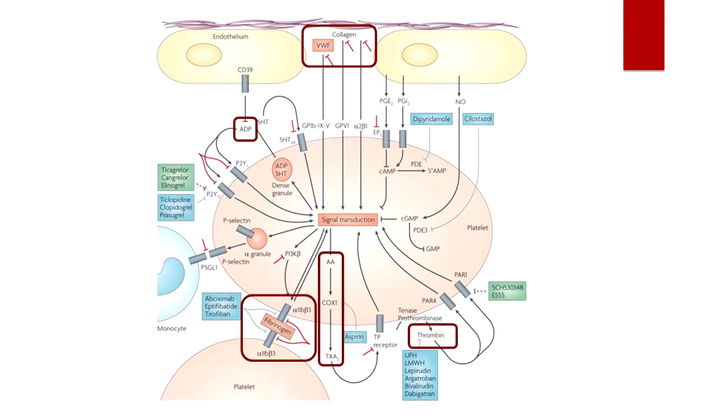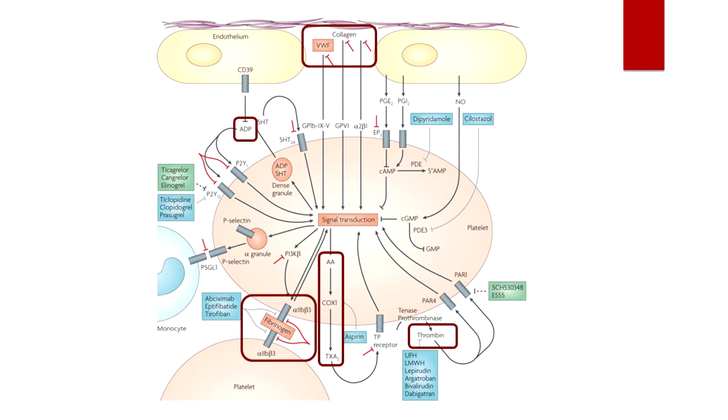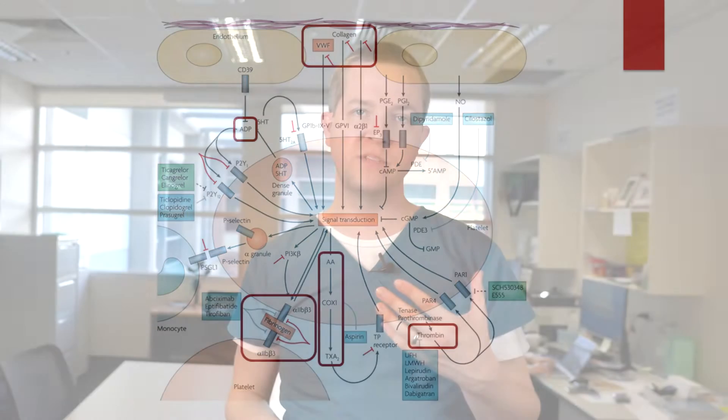Through arachidonic acid, cyclooxygenase-1 activation causes thromboxane A2 to be produced and released. Aspirin targets cyclooxygenase-1 to prevent thromboxane A2 from activating other platelets. The main platelet in the diagram binds to a nearby platelet through the 2b3a receptor on both sides — one receptor on one platelet binds the other, mediated by fibrinogen converting into fibrin. Thrombin also has a role in activating platelets through PAR1 and PAR4 receptors, showing how primary and secondary hemostasis have many cross-activating processes at play.